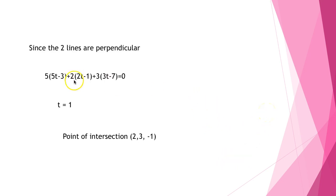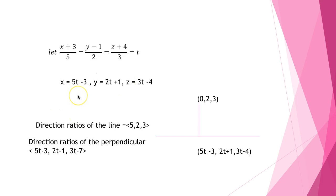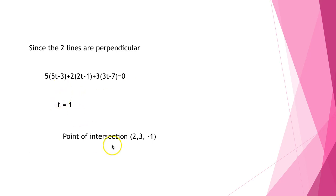Since the two lines are perpendicular, the dot product of their direction ratios is zero. So 5(5t − 3) + 2(2t − 1) + 3(3t − 7) = 0, giving t = 1. Substituting back, we get the foot of the perpendicular as the point (2, 3, −1).